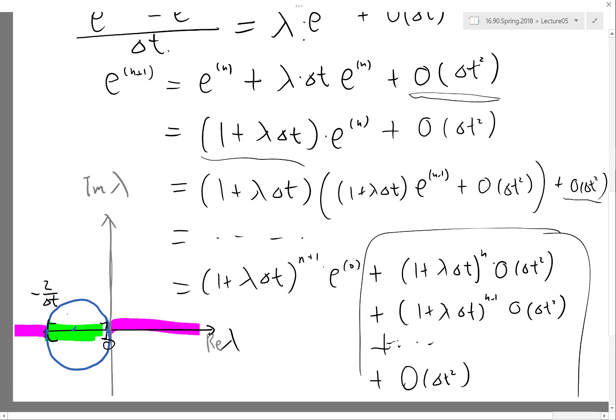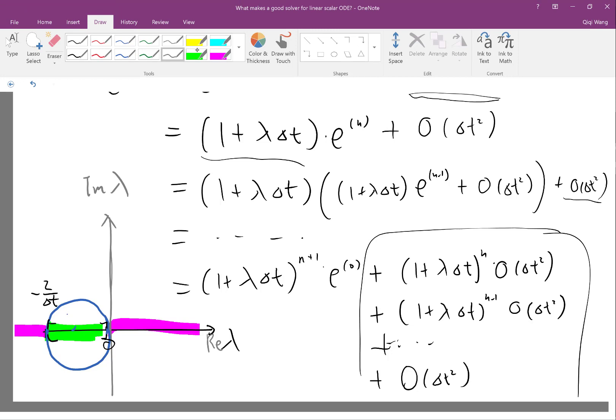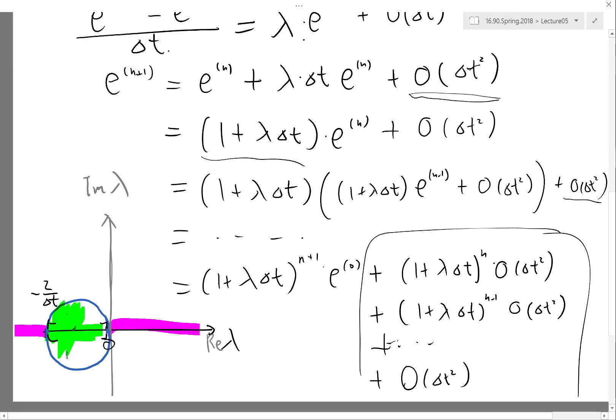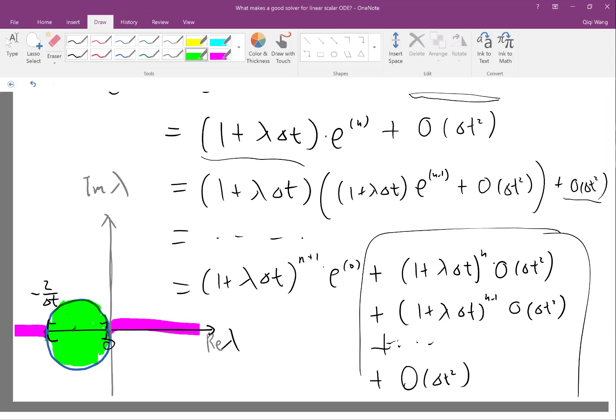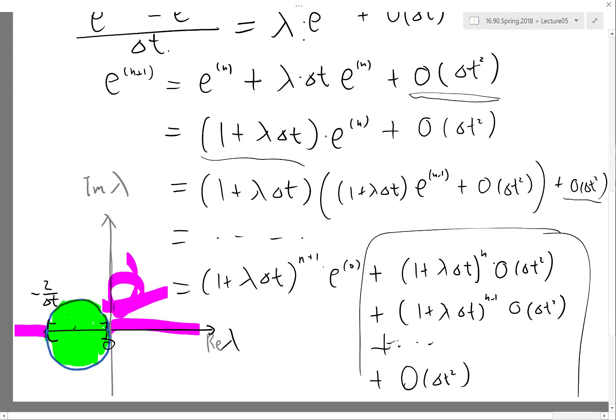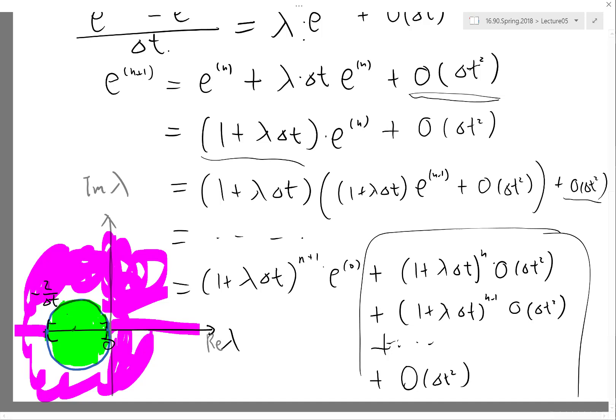All right, so now inside the circle is the stability region of forward Euler. Anywhere outside the circle is unstable. So that actually includes the whole imaginary axis—I have unstable anywhere over here. Okay, so for example, if lambda is equal to i or 2i or 0.01i, my forward Euler is going to blow up.